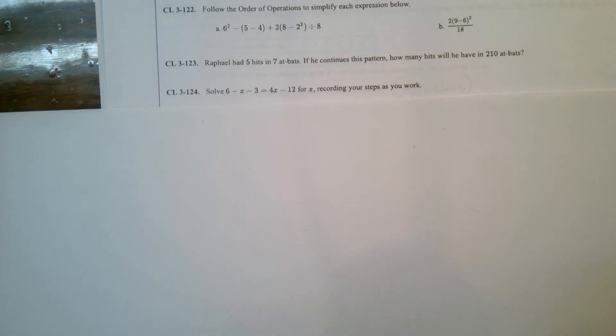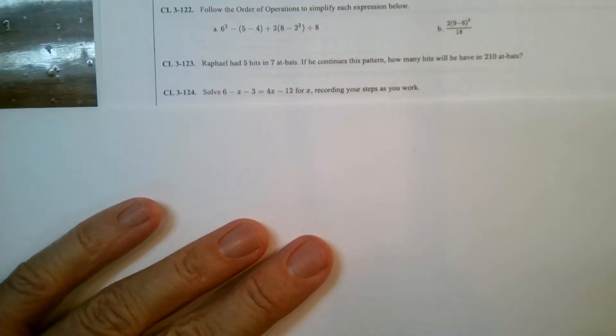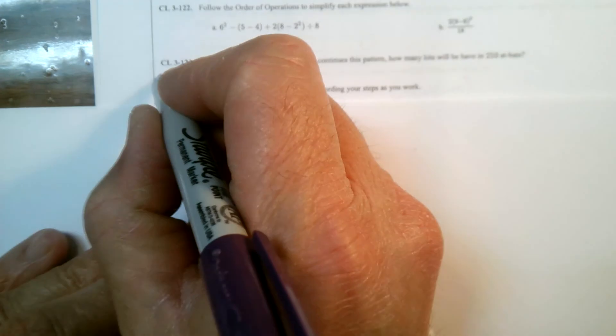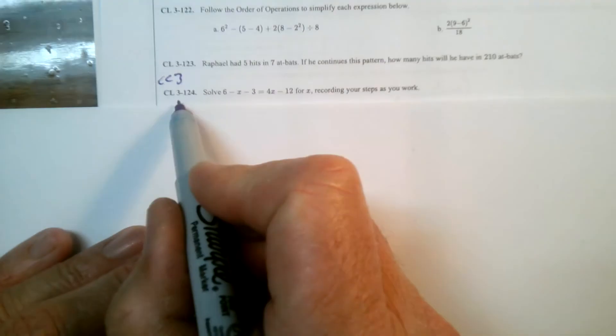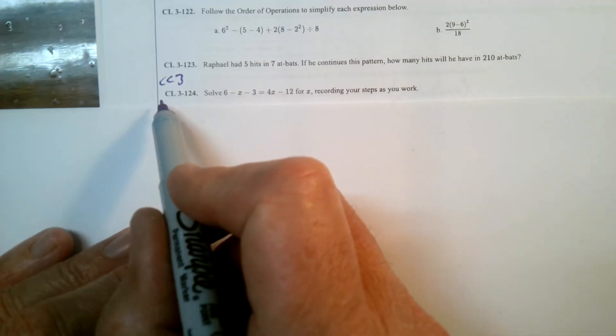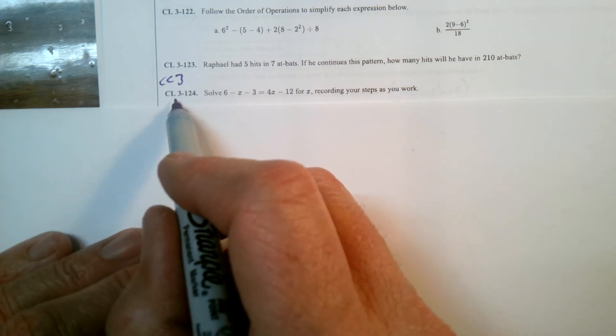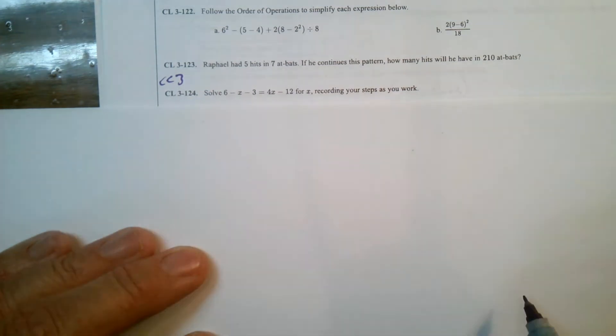Hey folks, Mr. Dell here. We are looking at CC3, so this is CPM Course 3, specifically looking at our closure exercises, our closure section. And this one is 3-124.